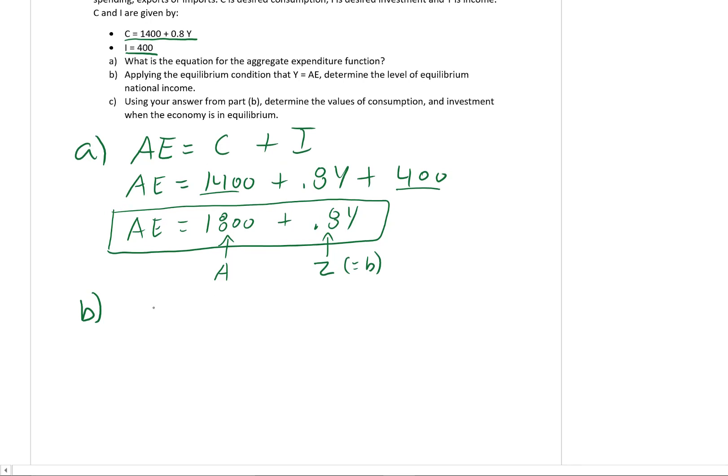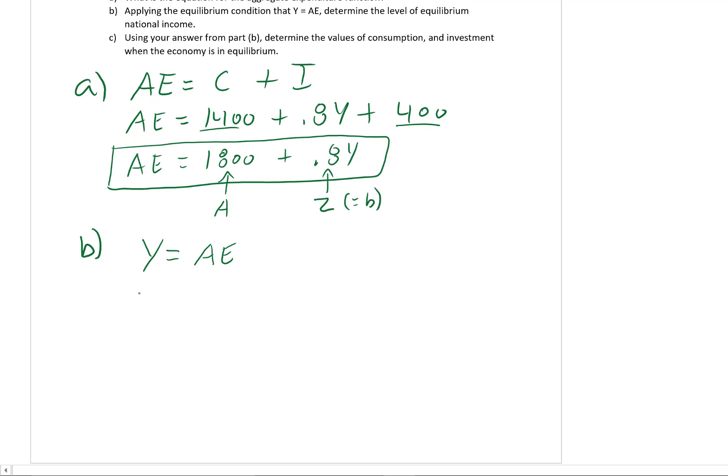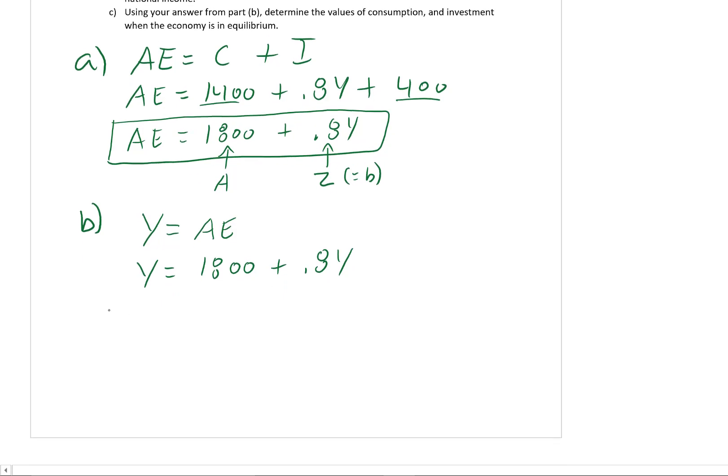We know that we have this equilibrium condition, Y equals AE. So now we just need to plug in this function that we just found for aggregate expenditure above in part A. We just need to plug that into the right-hand side of part B. So Y equals 1800 plus 0.8Y. Now we can simply solve.